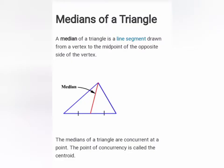Median of triangle: The median of a triangle is a line drawn from a vertex to the midpoint of the opposite side. A triangle has three medians.